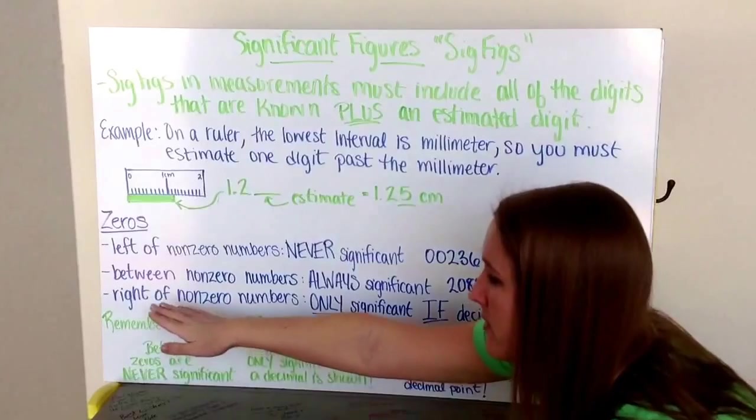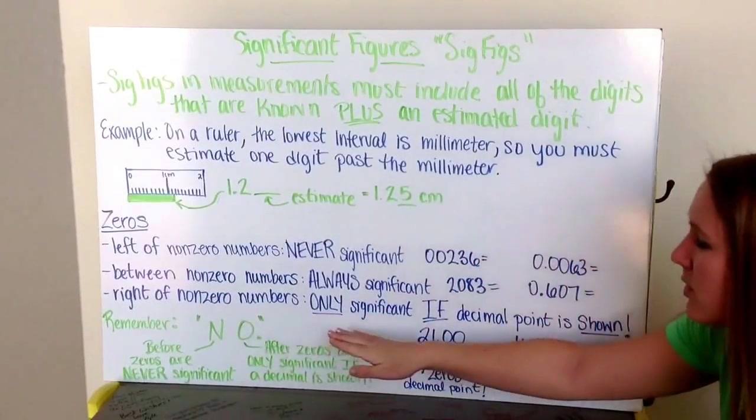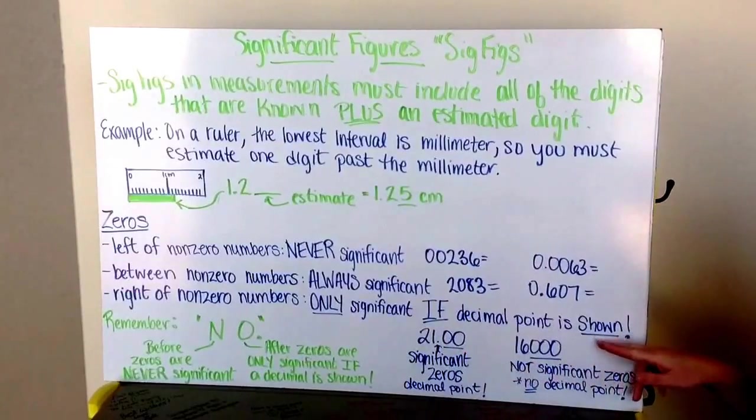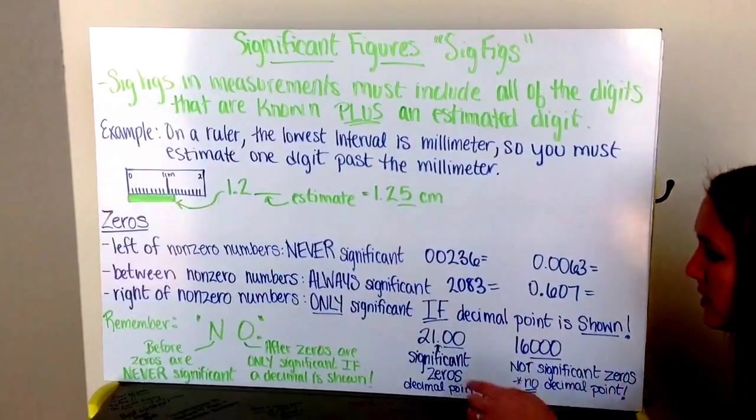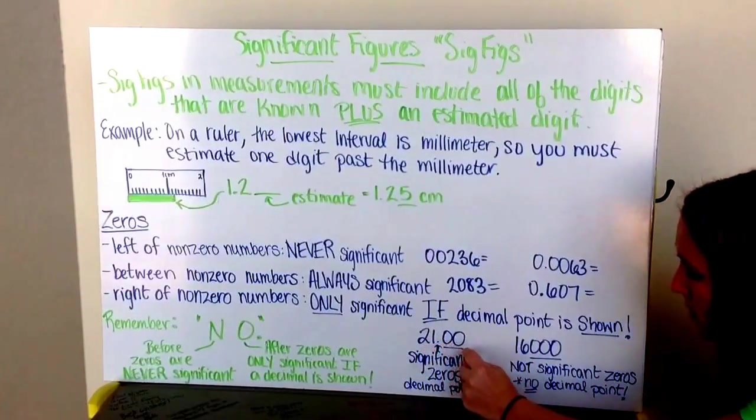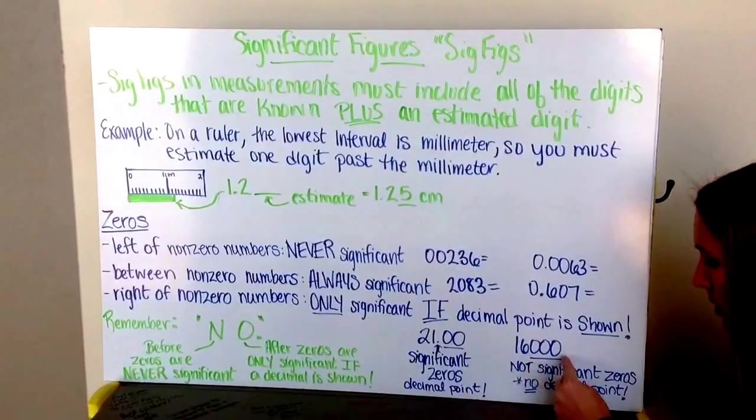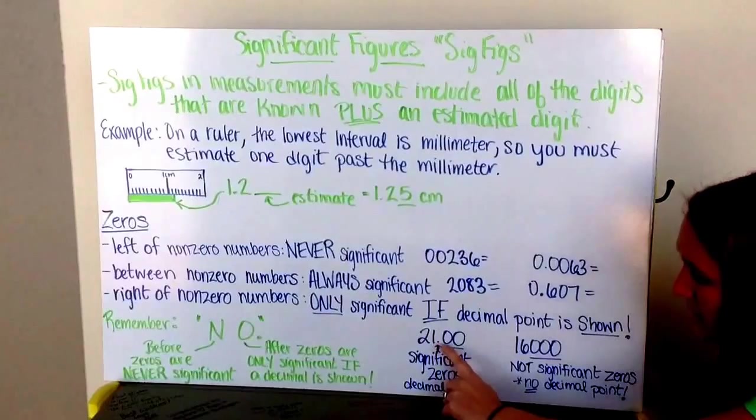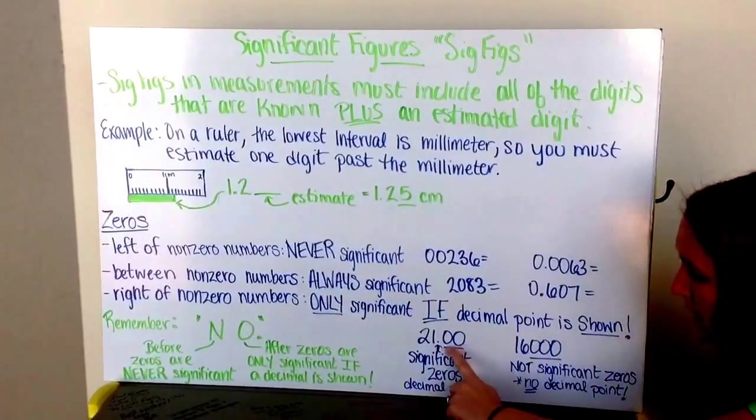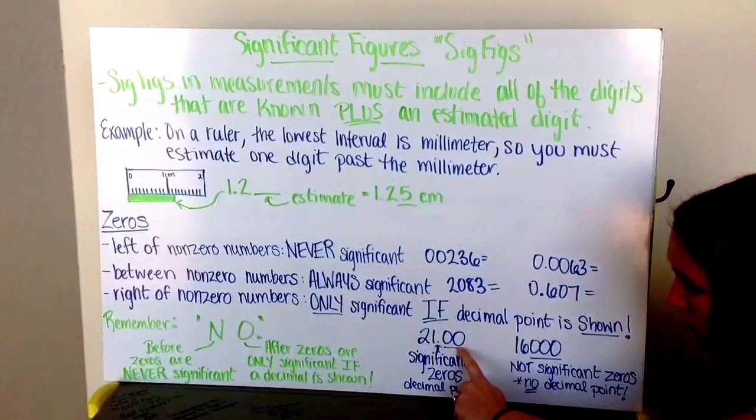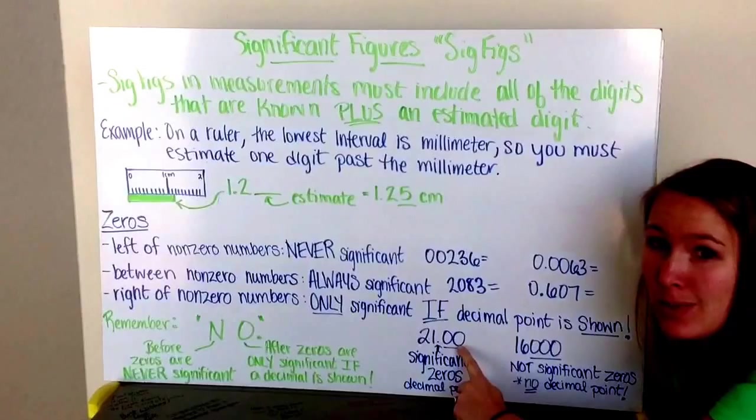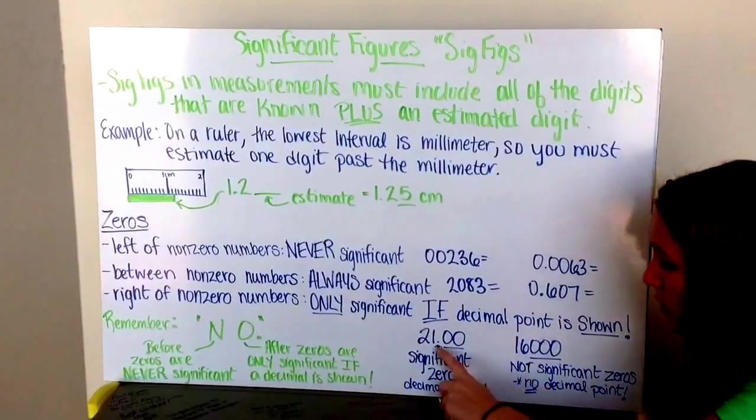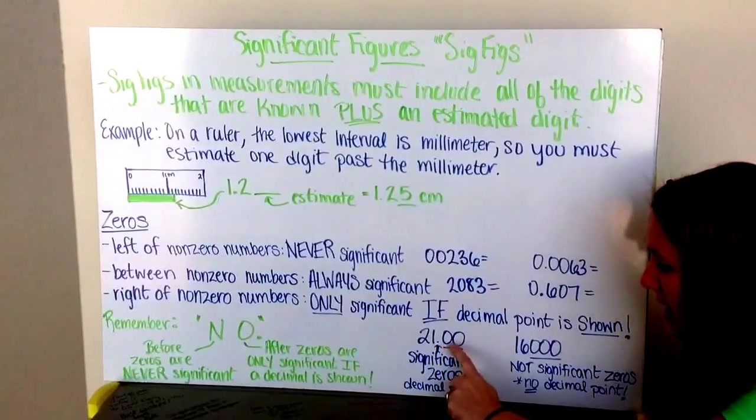Now it could also have zeros to the right of non-zero numbers. These are going to only be significant if a decimal point is shown. Examples of this would be 21.00 versus 16,000 with no decimal point here. By showing the decimal point, this tells me that I could measure precisely out to the hundredths place. It just so happened that it was exactly 21, let's say, meters long.